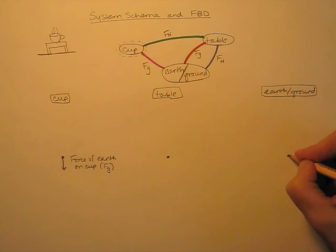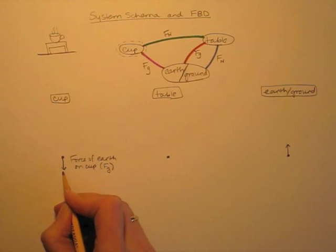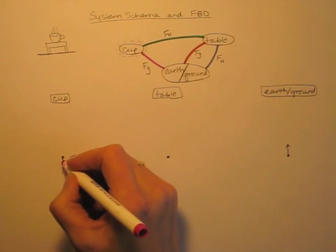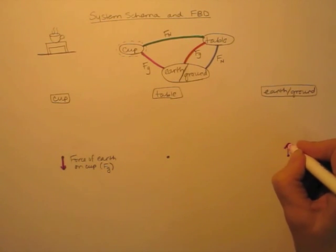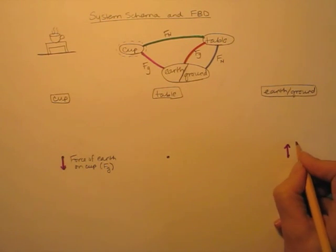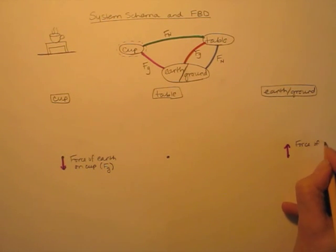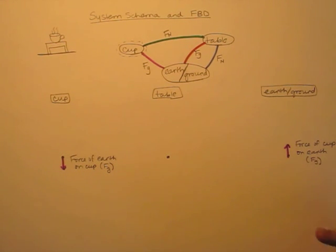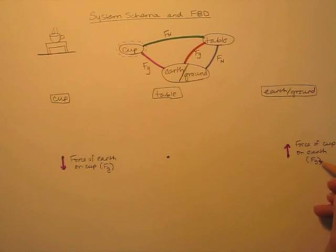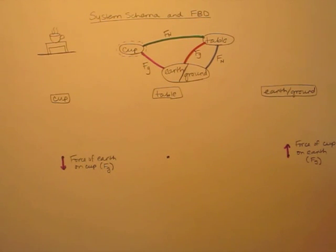That goes on the diagram of the earth with equal length and equal magnitude — these forces are the same size but opposite in direction. Color coding them pink, this is the force of the cup on the earth, and this is a gravitational force. Usually if you were to drop a cup, you would notice the cup accelerating towards the earth, but you would not notice the earth accelerating towards the cup. That's because the mass of the earth is so tremendously large that the acceleration is not measurable — it's just so small.